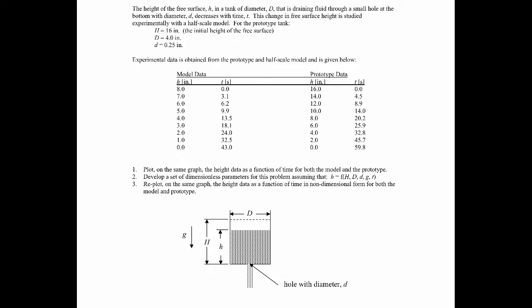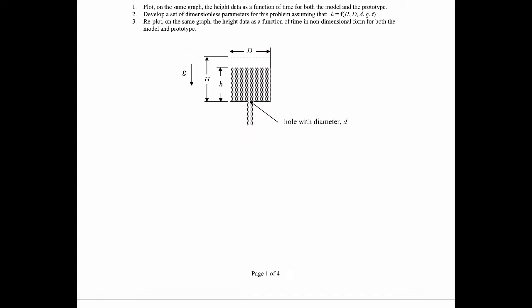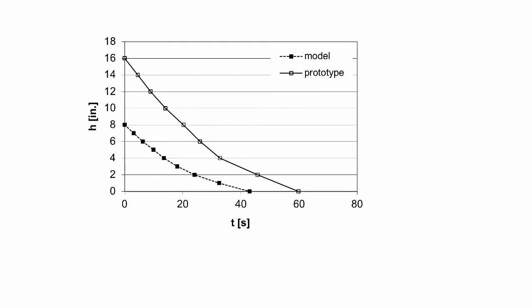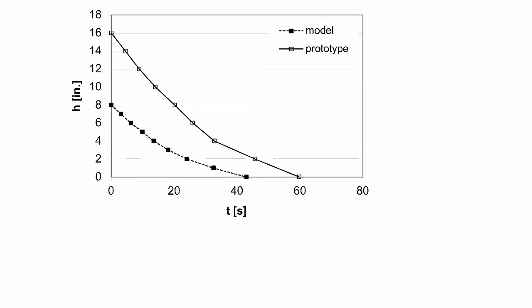Part one is pretty straightforward — we just plot the data: time on the x-axis and height as a function of that time, for both datasets on the same plot. The prototype starts at 16 inches and decreases with time until it empties after a minute. The model starts at 8 inches because it's a half-scale model, and you can see it takes less time to discharge — two separate curves as you'd expect.